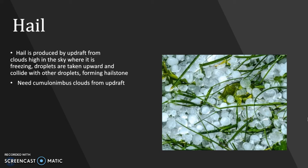Hail is produced by updrafts from clouds that are high in the sky where it is freezing. The droplets are taken upward and collide with other droplets, which form hailstones. In order for hail to be made, you will need a cumulonimbus cloud to get a large enough updraft.